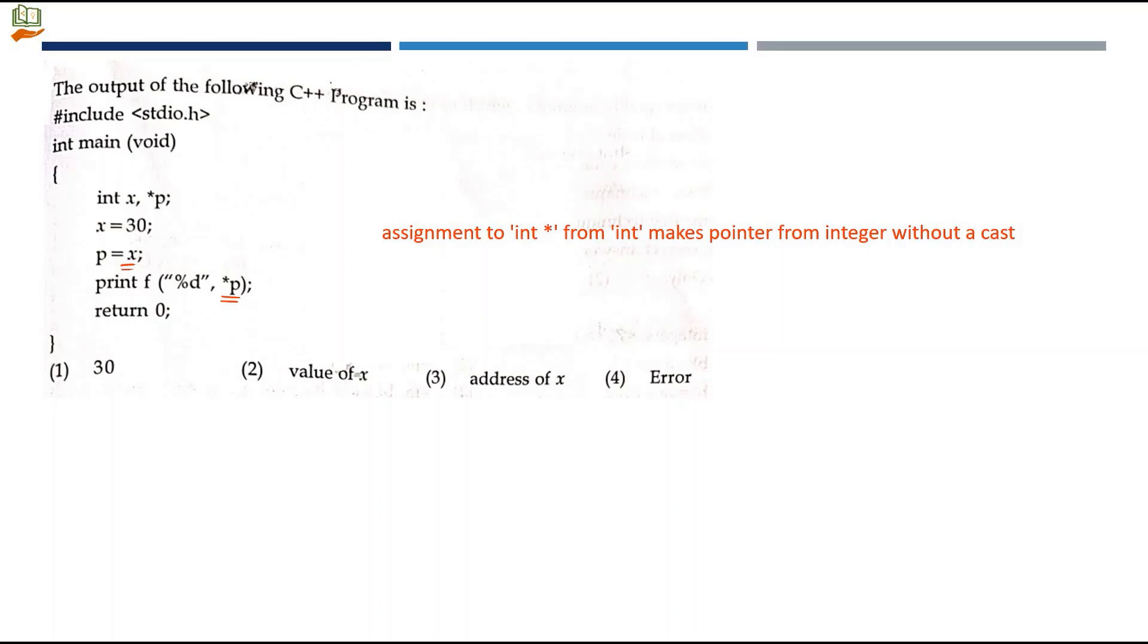When you execute this program, you will get an error stating assignment to int from int makes pointer from integer without a cast. From int means this is X and int star is when you are assigning something to P, it should be of pointer type and not integer type. Try executing this code in any online compiler. When the right statement P equals ampersand X is mentioned, then the output will give 30. Asterisk P means pick the value from the address. What is the value present in the address of X? It is 30. 30 will be printed only when the statement is ampersand X. Since we get error, we can mark option 4, error, to be the right answer.